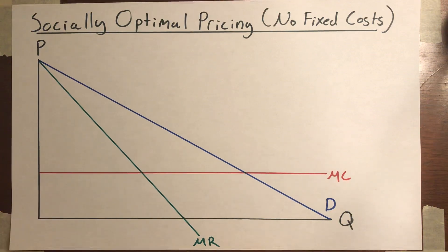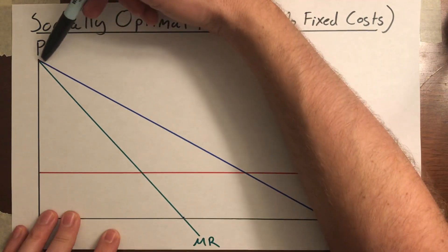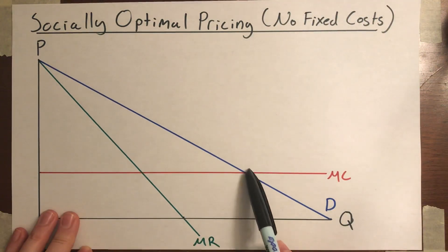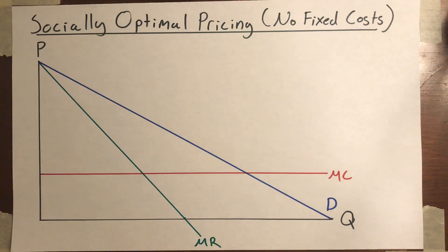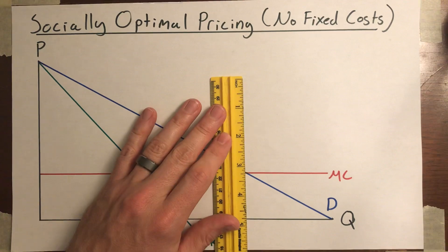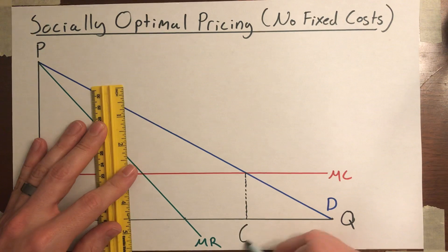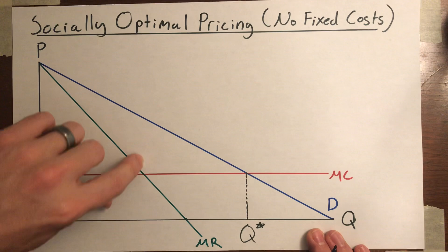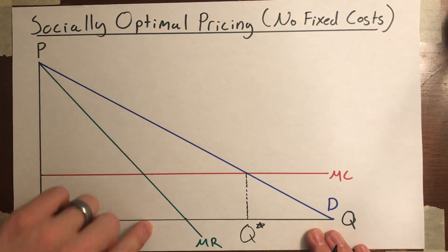As I pointed out in the last video, the total available gains from trade is all the area below the demand curve and above the marginal cost curve, up to the point where the two meet. So if you are going to maximize the total gains from trade, the quantity of units you would have the monopolist produce would be right here, Q star. In fact, they're going to produce less than that — where marginal cost equals marginal revenue — because that's what maximizes the firm's profits.